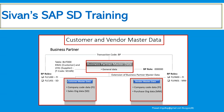In customer master data, we use two BP roles: FLCU00 for finance — representing company code data — and FLCU01 for SD, representing sales organization data. Each business partner role represents one organizational information level. Similarly in vendor master data, FLVN00 represents the company code data, and FLVN01 represents MM, that is purchasing data in material master data.